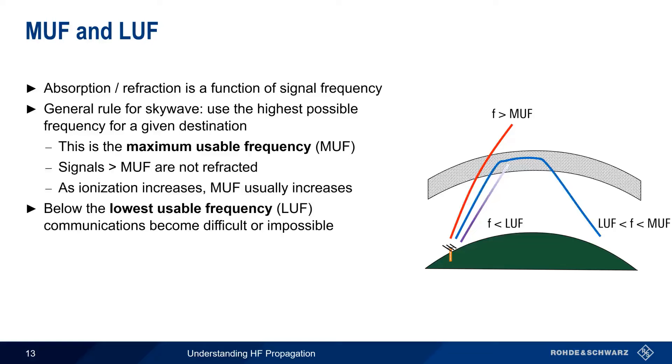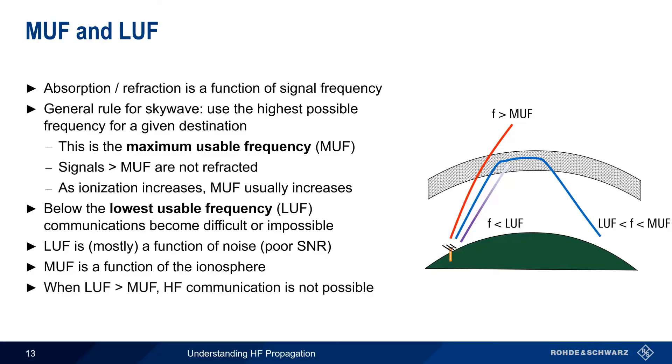There is one very important difference, though, between MUF and LUF. Because the LUF is mostly determined by noise, using higher transmit powers, a better antenna, etc., can improve or lower the LUF. MUF, on the other hand, is entirely a function of the ionosphere. You can't improve or increase the MUF by using more power or a better antenna. The MUF simply is what it is. And as we'll see shortly, if the LUF becomes greater than the MUF, no HF communication is possible.